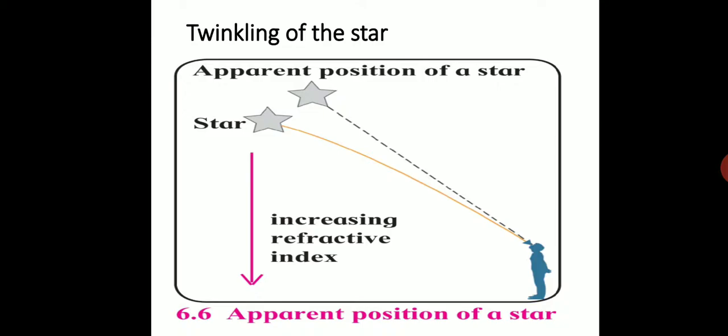If the intensity of light from one point source decreases, it increases from other sources. Hence, the average intensity of light coming from planets remains the same, and therefore planets do not twinkle.